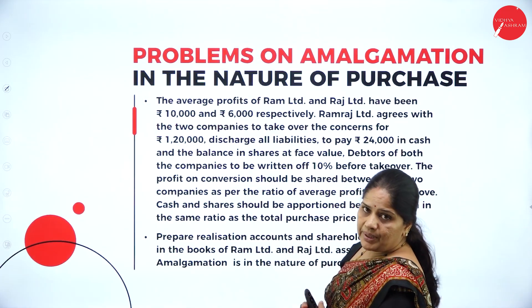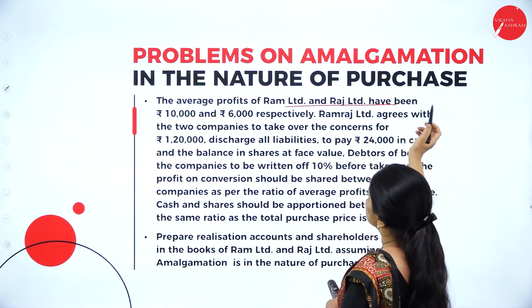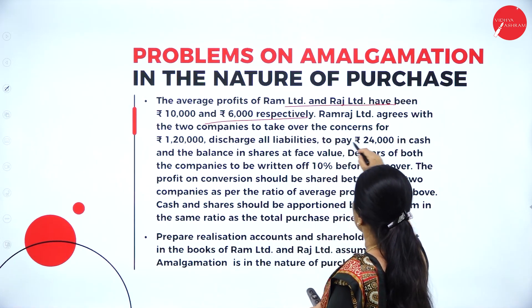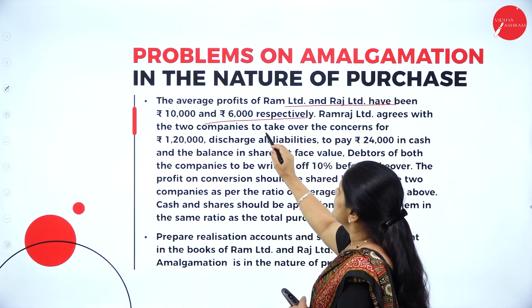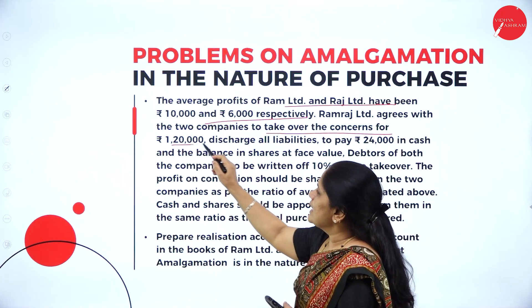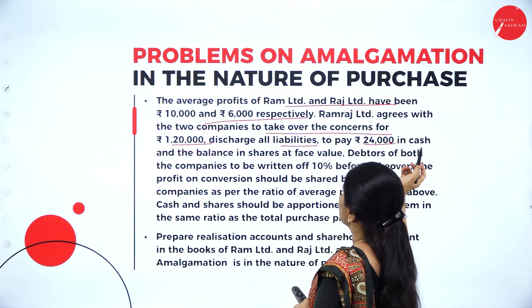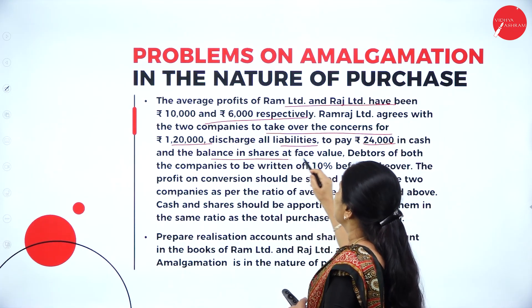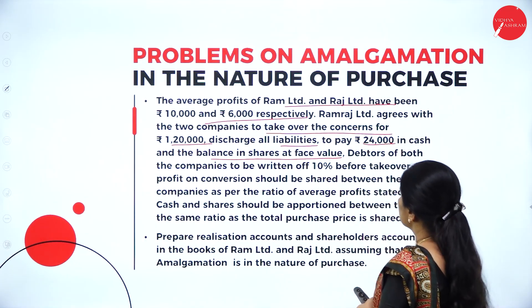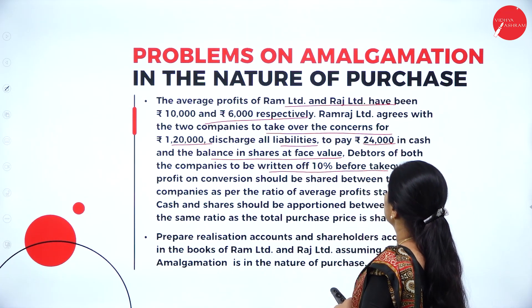The additional information here: the average profits of Ram Limited and Raj Limited have been 10,000 and 6,000 respectively. Ramaraja Limited agrees with the two companies to take over the concerns for rupees 1,20,000, discharge all liabilities, pay 24,000 in cash and the balance in shares at face value. The debtors of both companies to be written off 10% before takeover.